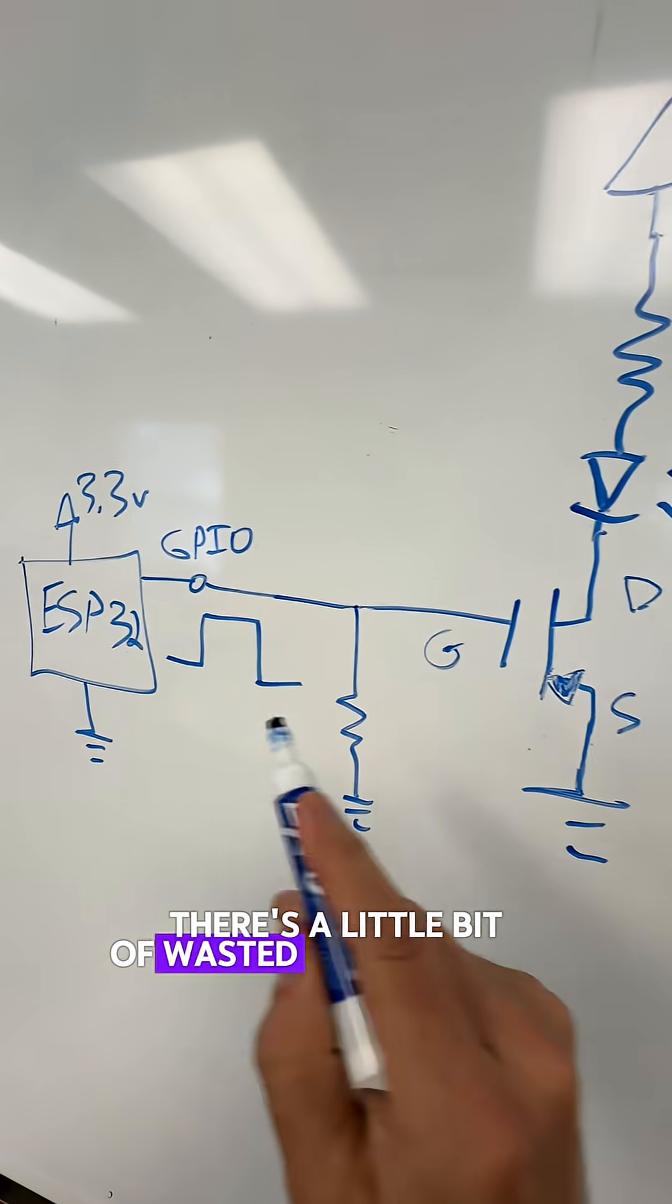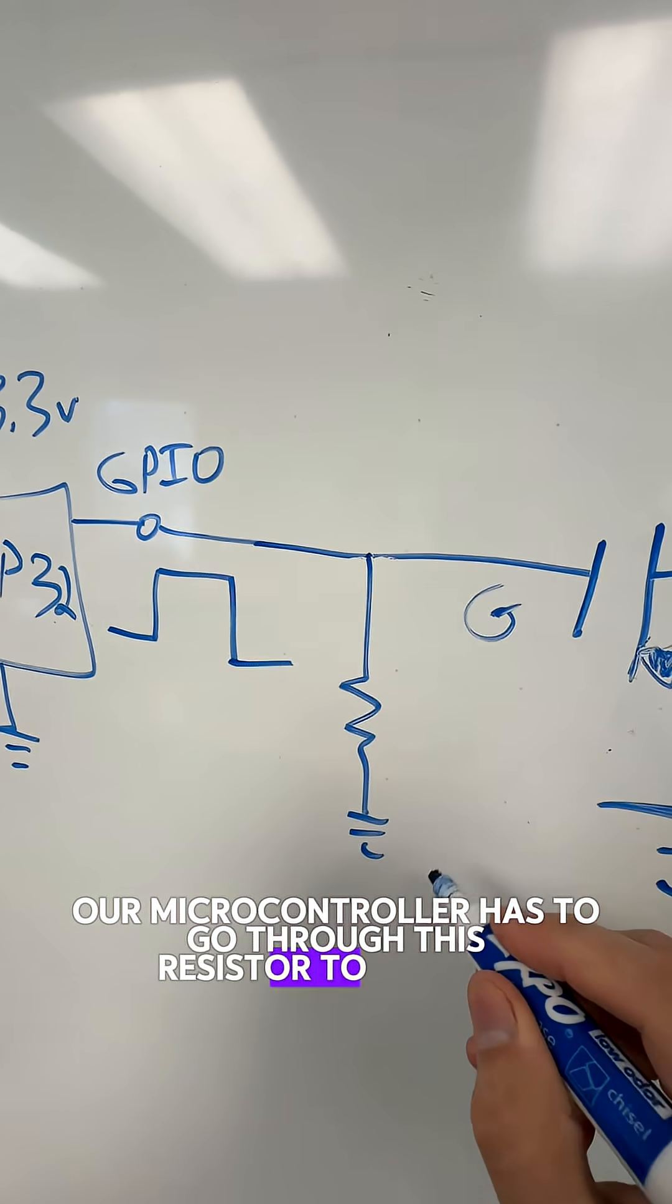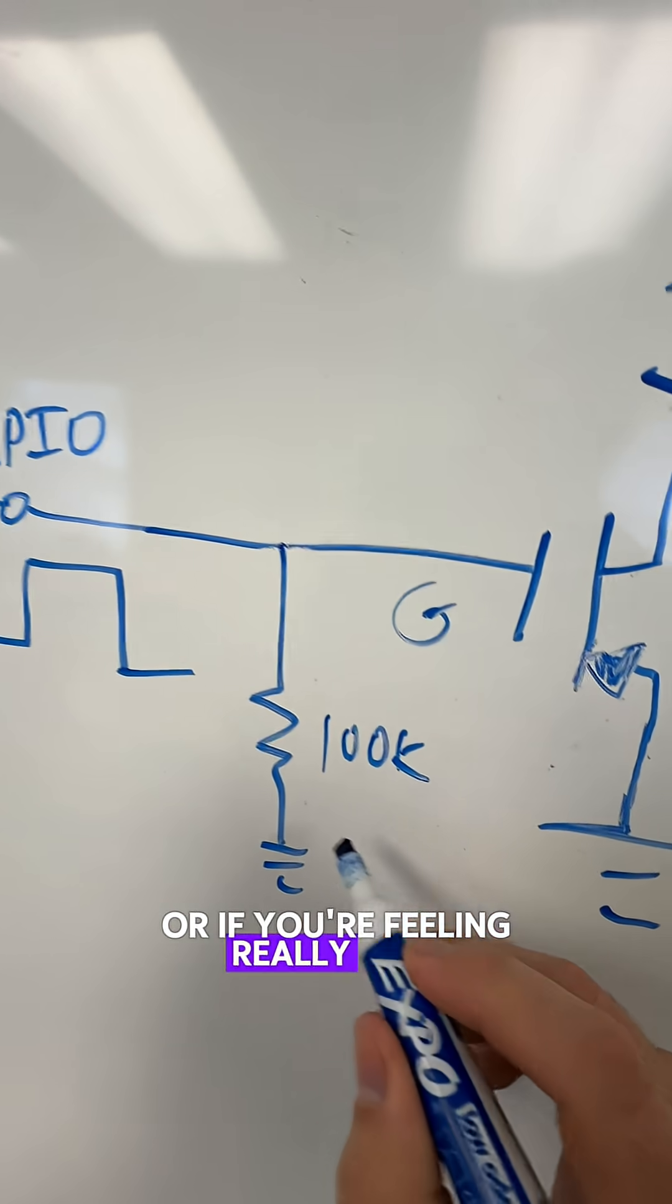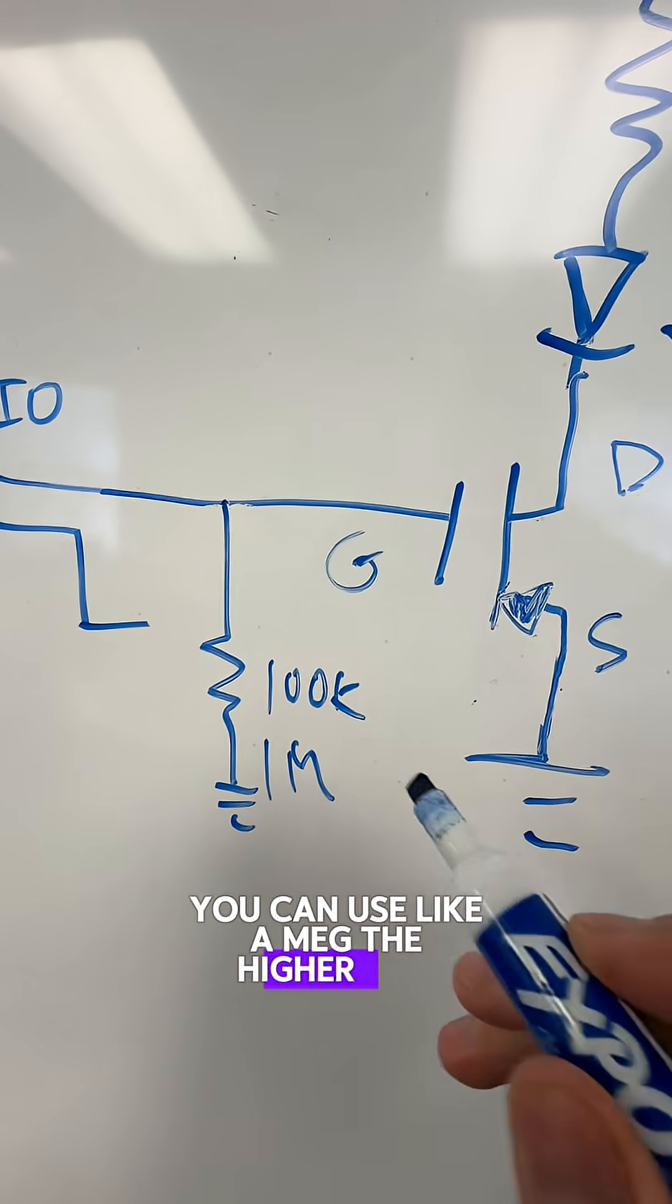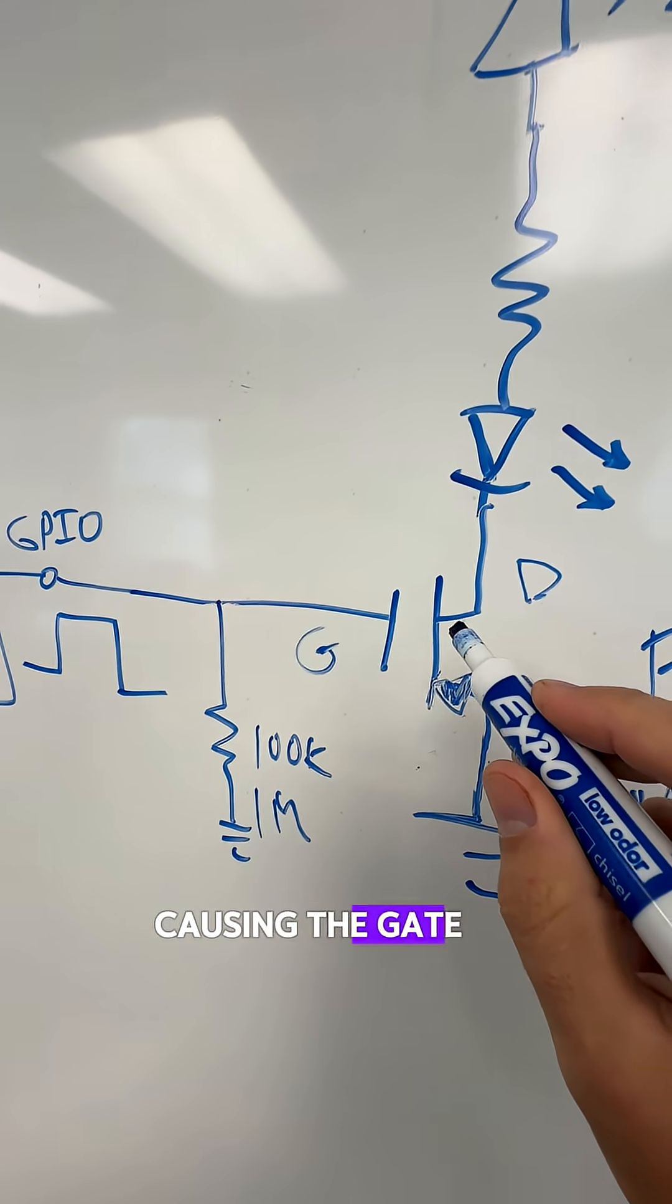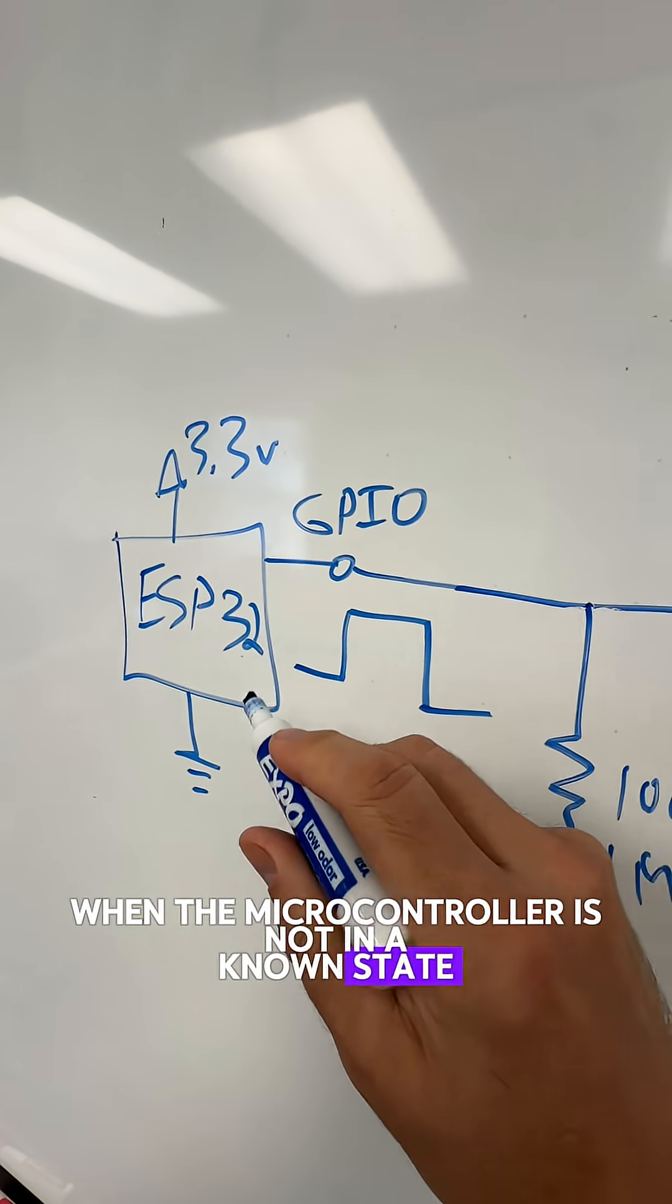Yes, there's a little bit of wasted current there because now our microcontroller has to go through this resistor to ground, but we can usually use a high value, like a 100K, or if you're feeling really wild, you can use like a meg. The higher you make that resistor, the more susceptible this circuit is to electrical noise causing the gate to turn on when the microcontroller is not in a known state.